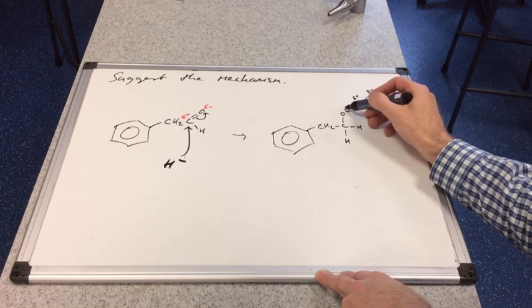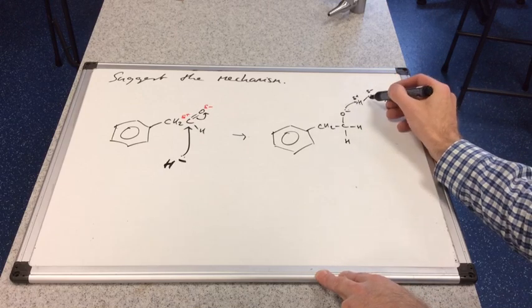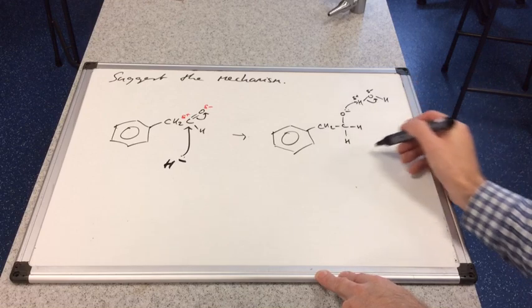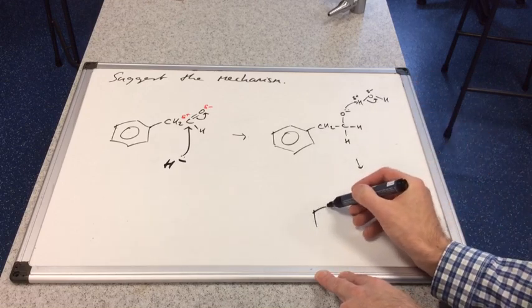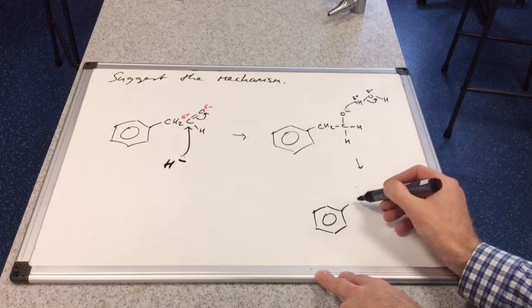Put that lone pair on. Grab that hydrogen. Break that bond. And we'll generate the product. CH2, and it'll be CH2OH.